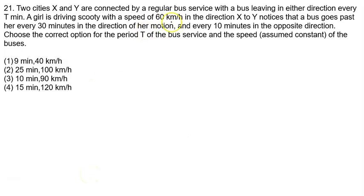Two cities X and Y are connected by regular bus service with a bus leaving in either direction every T minutes. This is city X, this is city Y, and buses are leaving from both directions. The time interval between the buses is given to you, that is T minutes. Similarly this side also there are buses and they are leaving in this direction, and the time interval between these two buses is given to us T minutes.